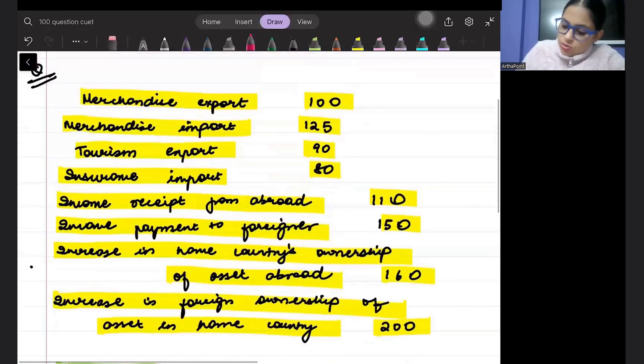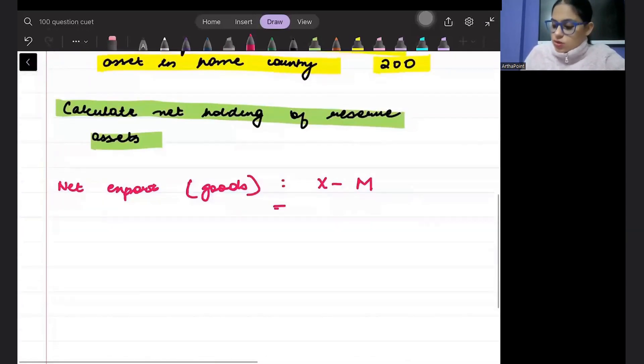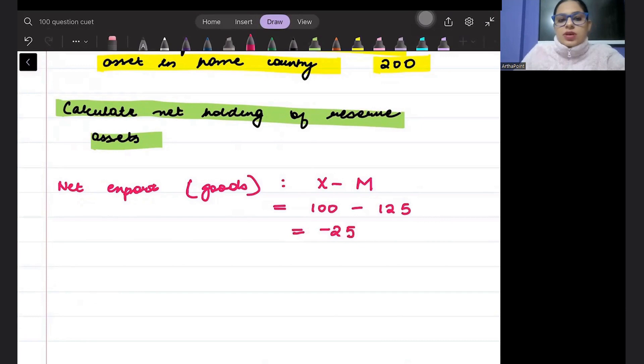Peter, humare export ho gay, good ke 100 or import ho gay 125. So, 100 minus 125, ee ho gay minus 25. Peter, this is merchandise trade balance. This is trade balance.